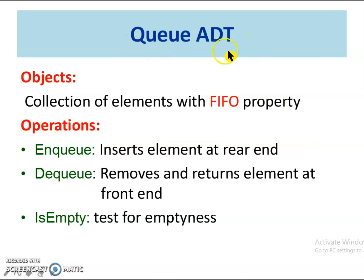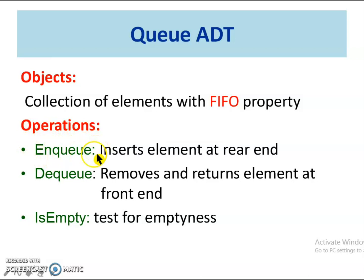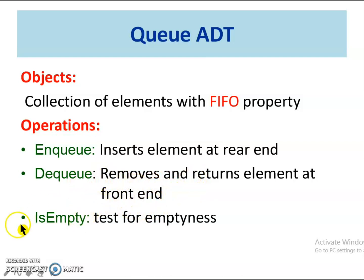Next, let us see the Queue ADT. The structure of the queue is the collection of elements with the FIFO property. The operations that can be performed in the queue are: enqueue operation, which inserts an element at the rear end of the queue; dequeue operation, which deletes and returns an element at the front end of the queue; and isEmpty, which tests for emptiness of the queue.